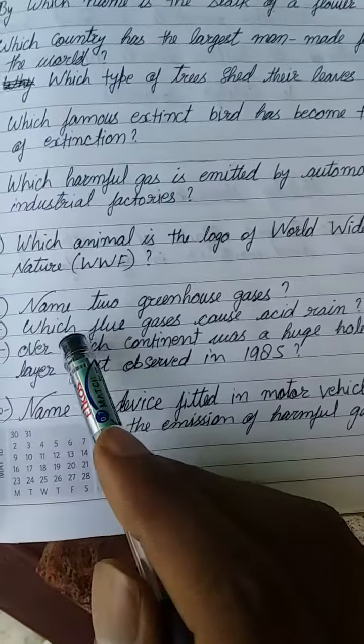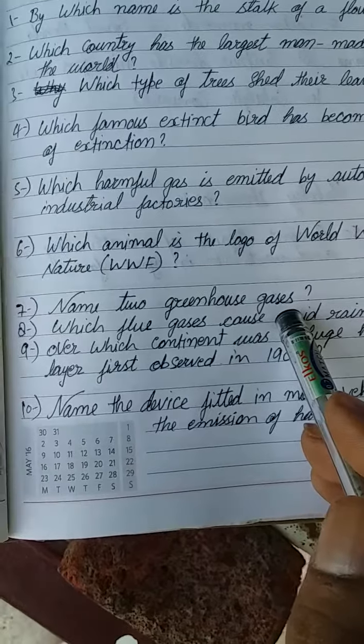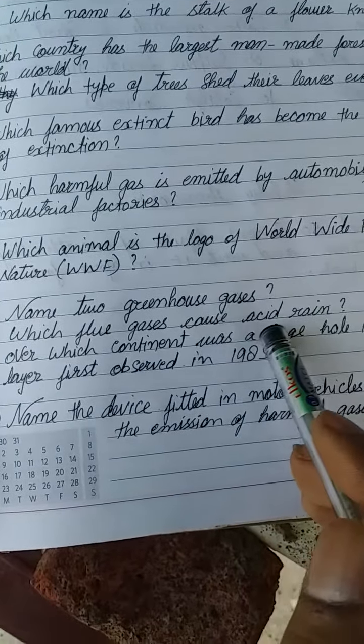Seventh question: Name two greenhouse gases. Eighth question: Which flue gases cause acid rain?